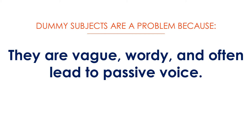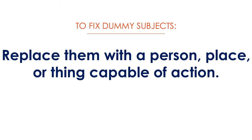Dummy subjects are a problem because they're vague — they're not people, places, or things capable of action. They're also wordy, and they often lead to passive voice, which we'll discuss momentarily. To fix dummy subjects, all you've got to do is replace them with a person, place, or thing that is capable of action — replace that dummy subject with a concrete subject.